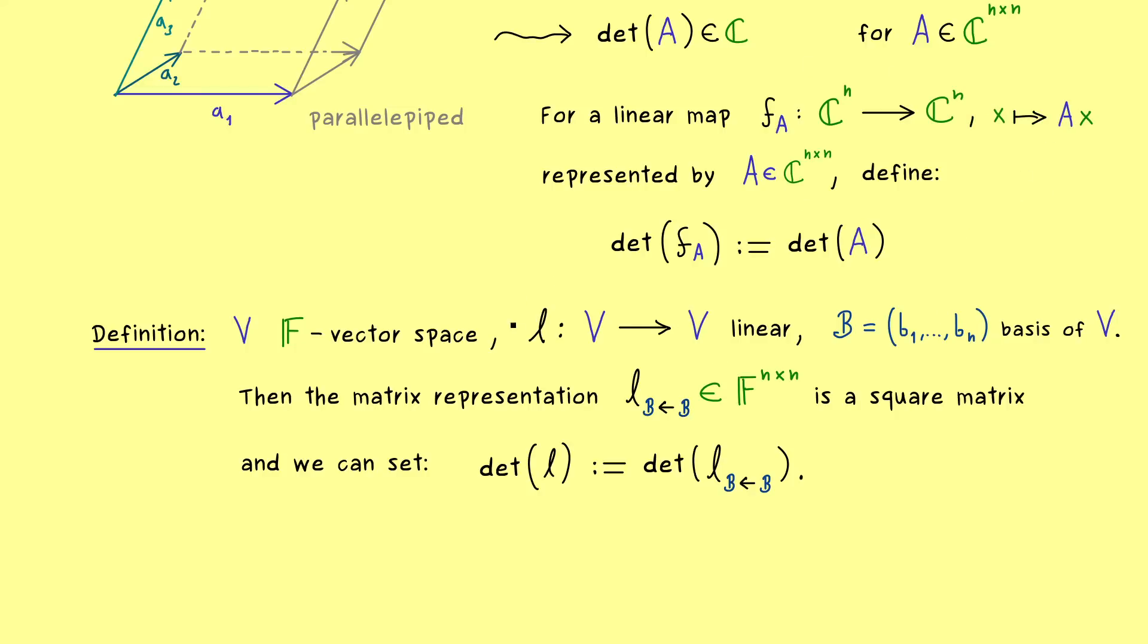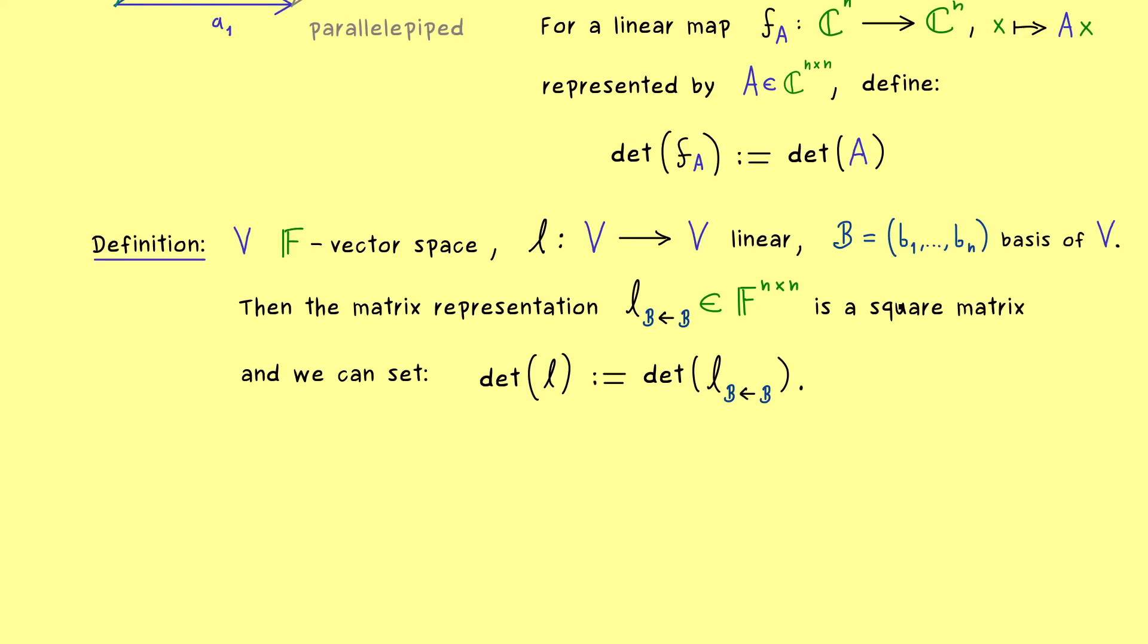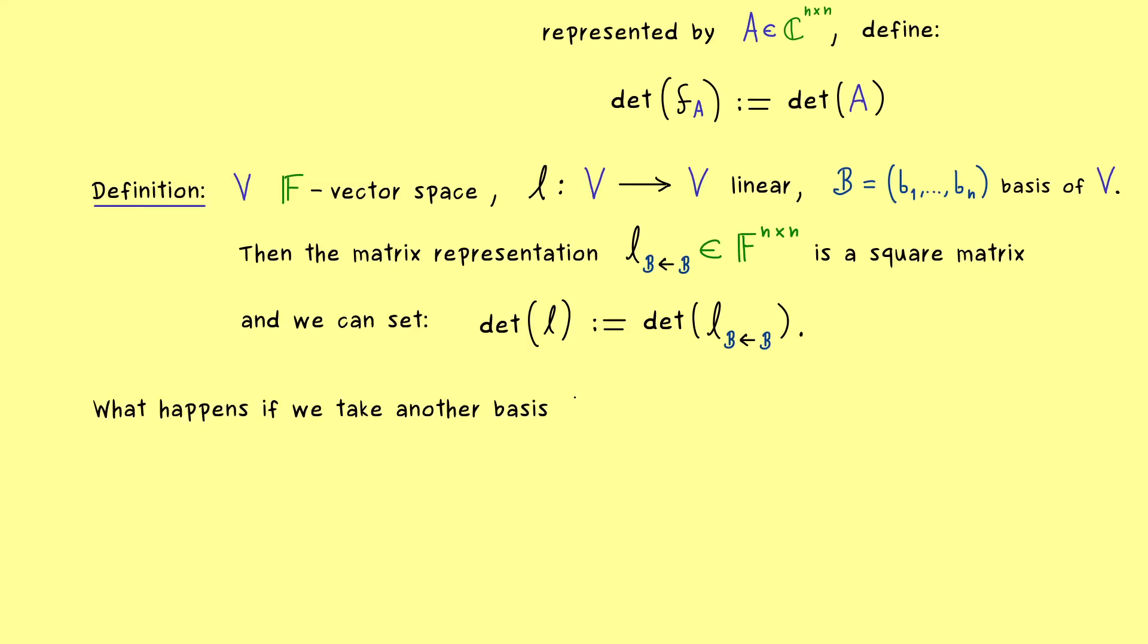but now we clearly have different matrix representations for the same linear map L. So we have to check what happens to this number, when we take a different basis of the vector space V. And maybe, as always, let's call it B tilde.